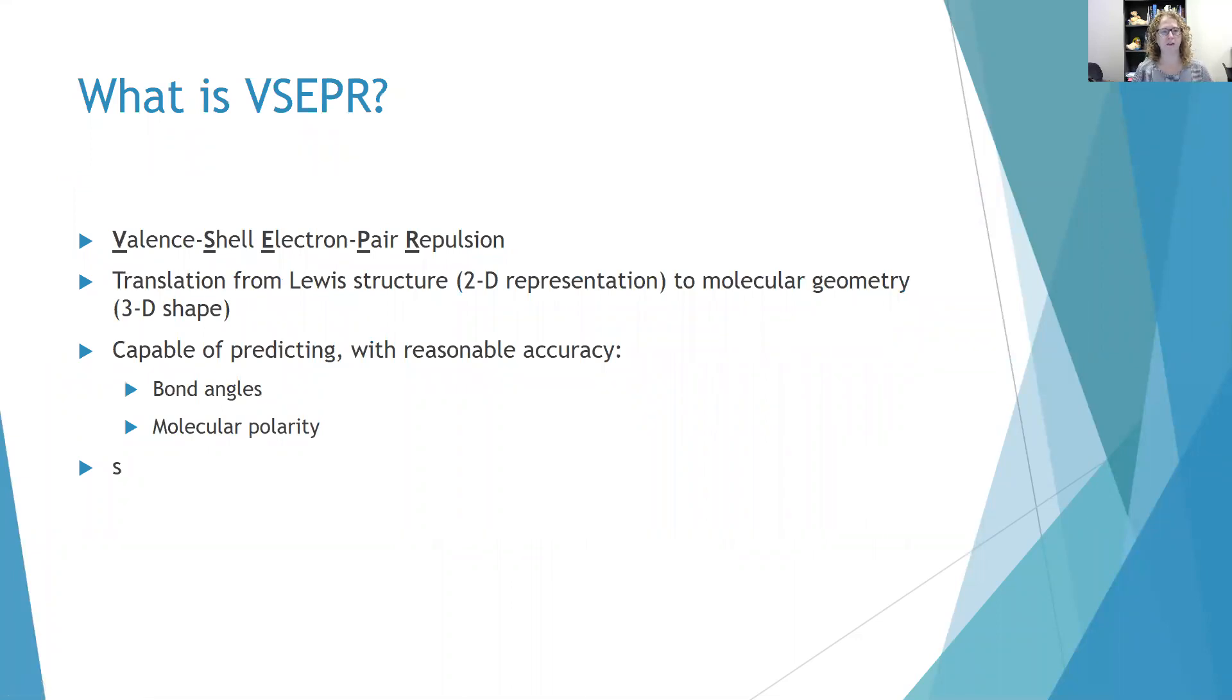VSEPR stands for valence shell electron pair repulsion. And the purpose of VSEPR is to be able to translate from a Lewis structure, a two-dimensional representation of something like methane.